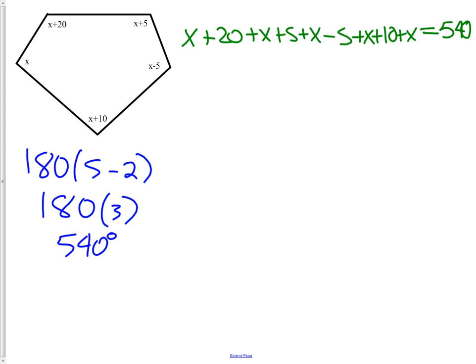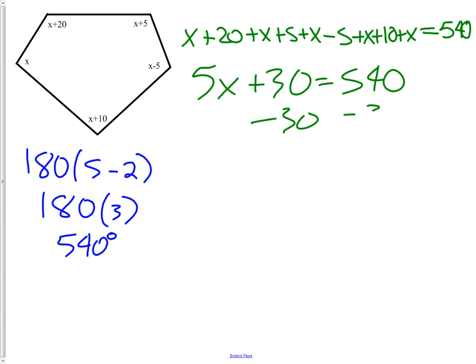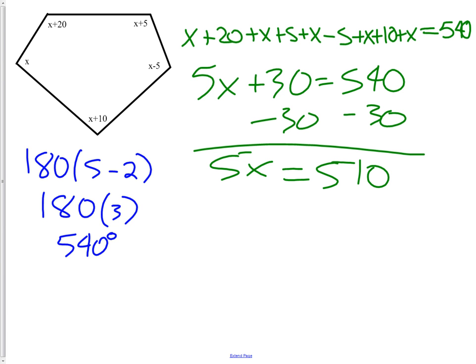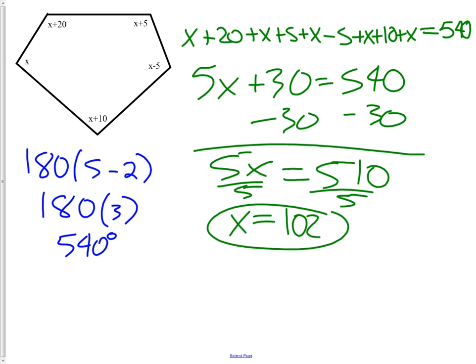Combining like terms gives 5X + 30 = 540. Subtracting 30: 5X = 510. Dividing by 5: X = 102. However, that may not be the final answer — check whether the problem asks for X or for the measure of a specific angle. If it asks for a specific angle, substitute 102 back in. For example, one angle expressed as X − 5 would be 102 − 5 = 97 degrees.